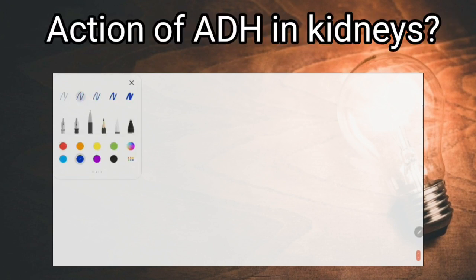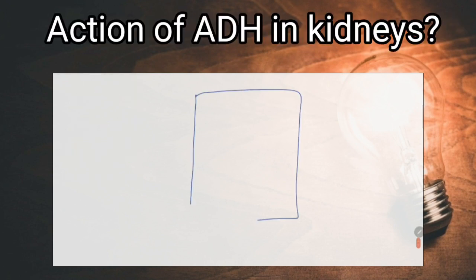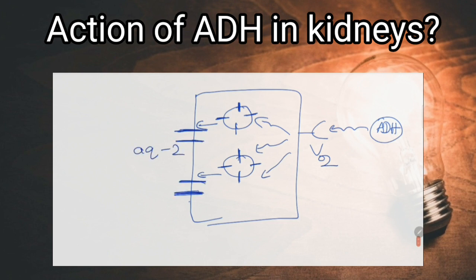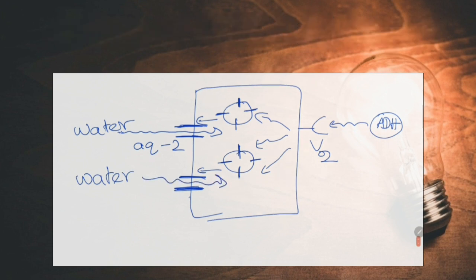What is the action of antidiuretic hormone in the kidneys? It acts on V2 receptors on collecting ducts causing insertion of aquaporin-2 water channels, which leads to increased reabsorption of water.